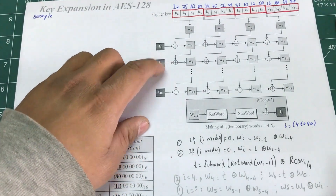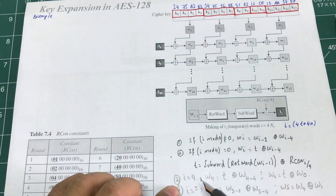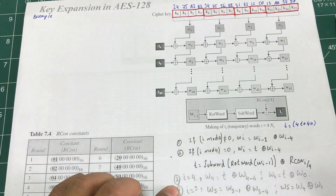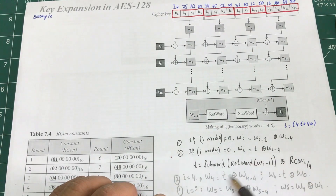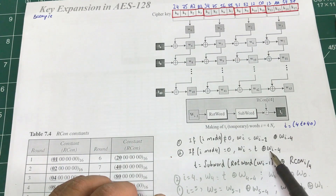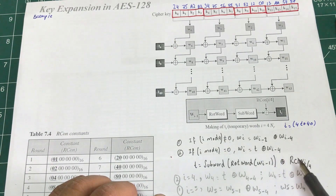In order to calculate W4, I is equal to 4. I need to find some T value, which we have learned in a previous video. I is equal to 4, so 4 mod 4 is 0. So I'm going to use this condition: W4 is going to be T XOR W_{i-4}, which is W0.